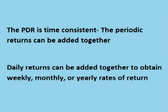In finance, the periodic daily return is often used instead of the simple percent change because the periodic daily return is continuously compounded, which means that it is time consistent. This makes it more useful for things like price modeling, correlation calculations, and risk management.